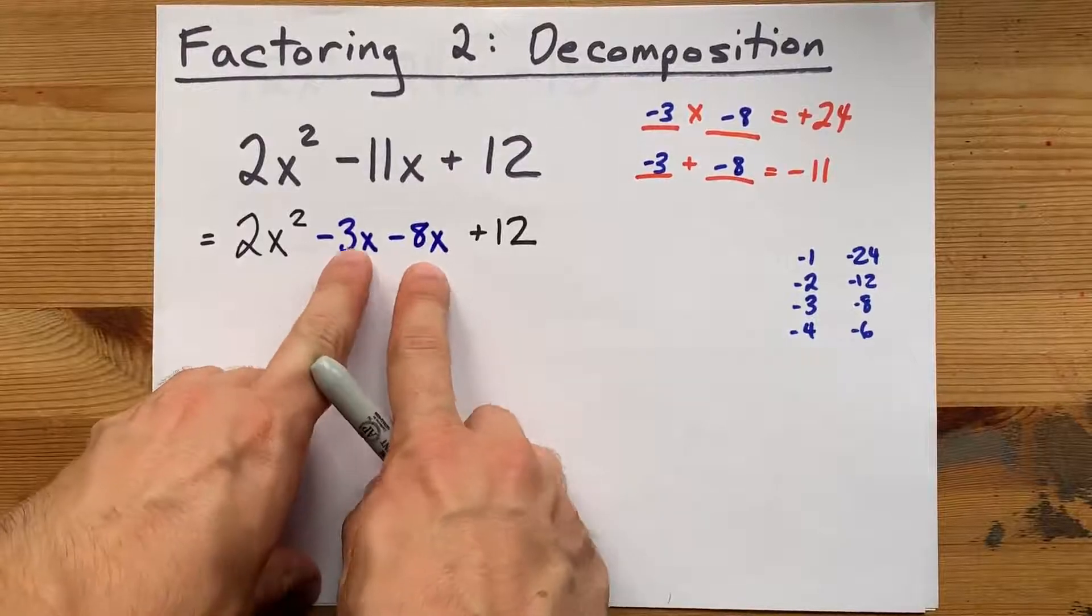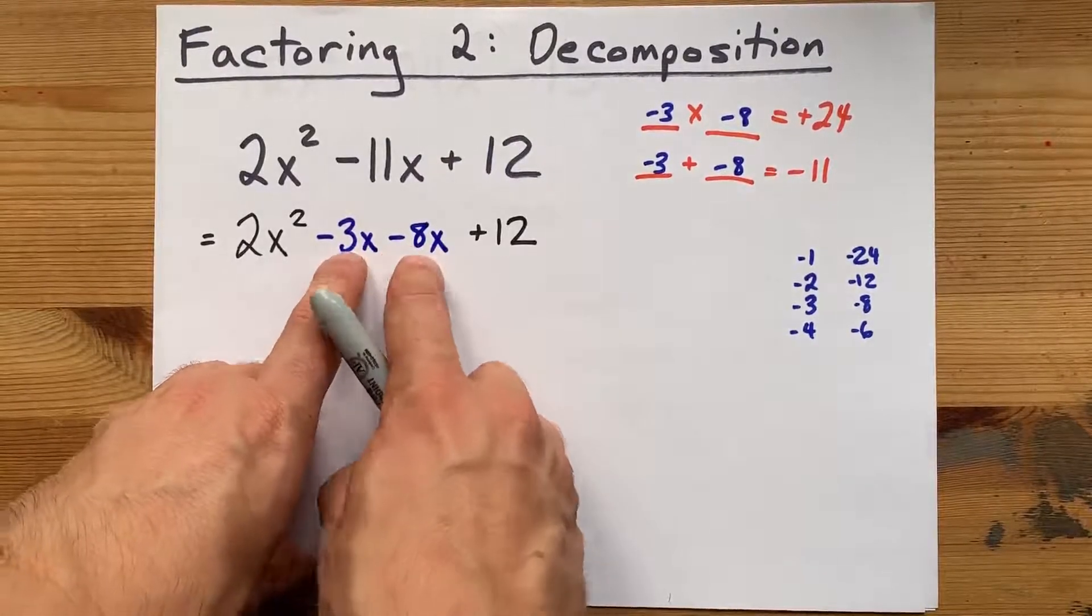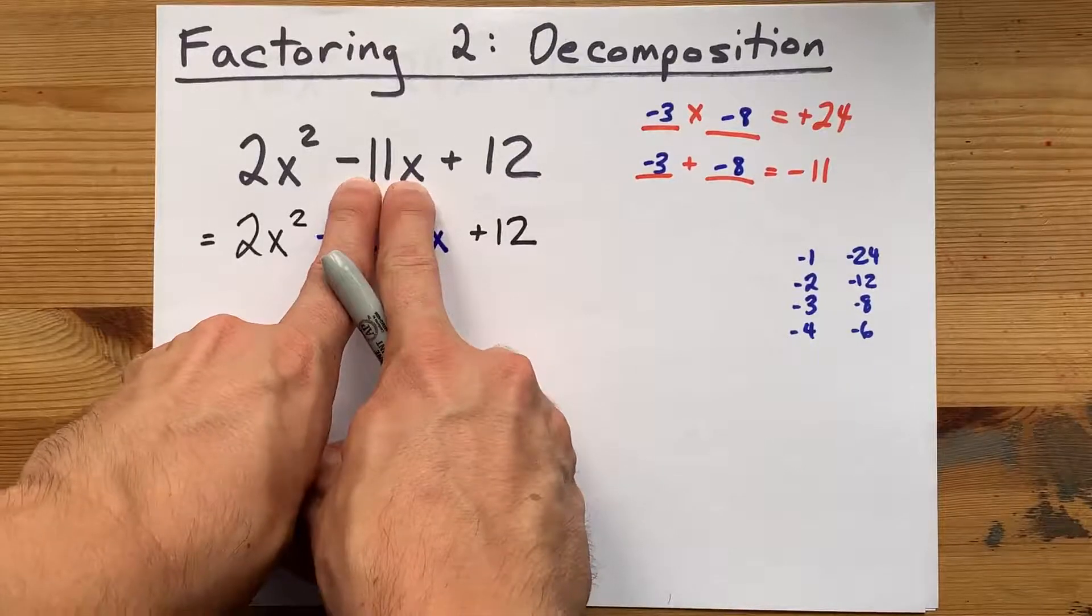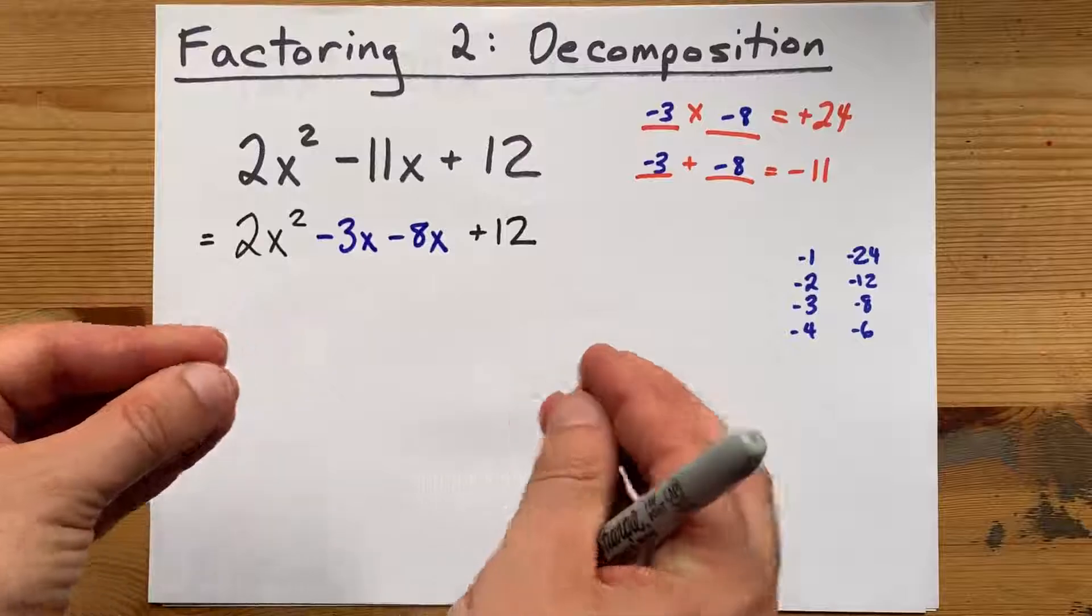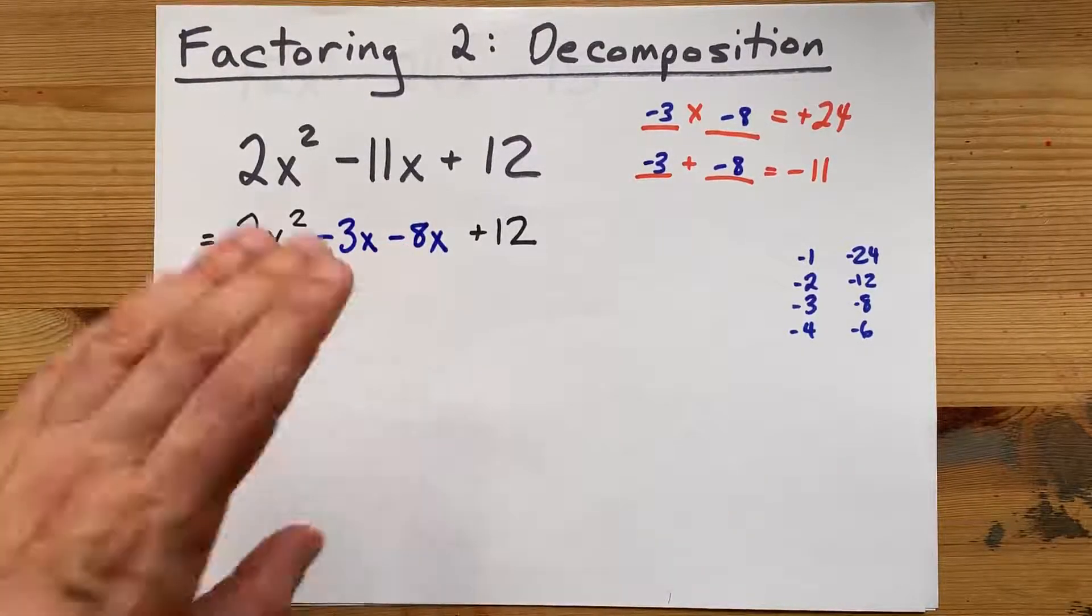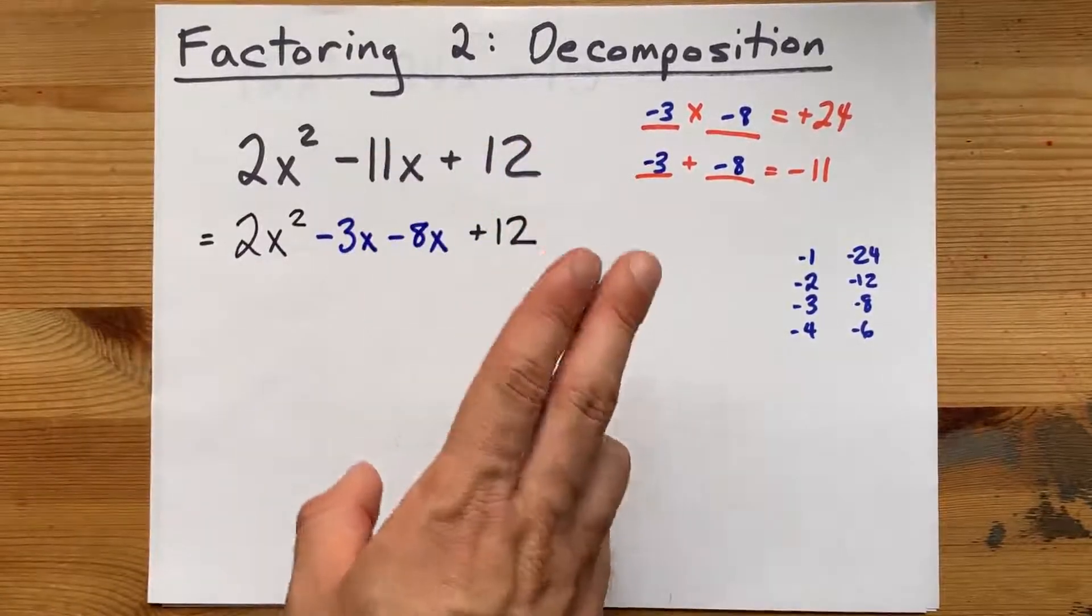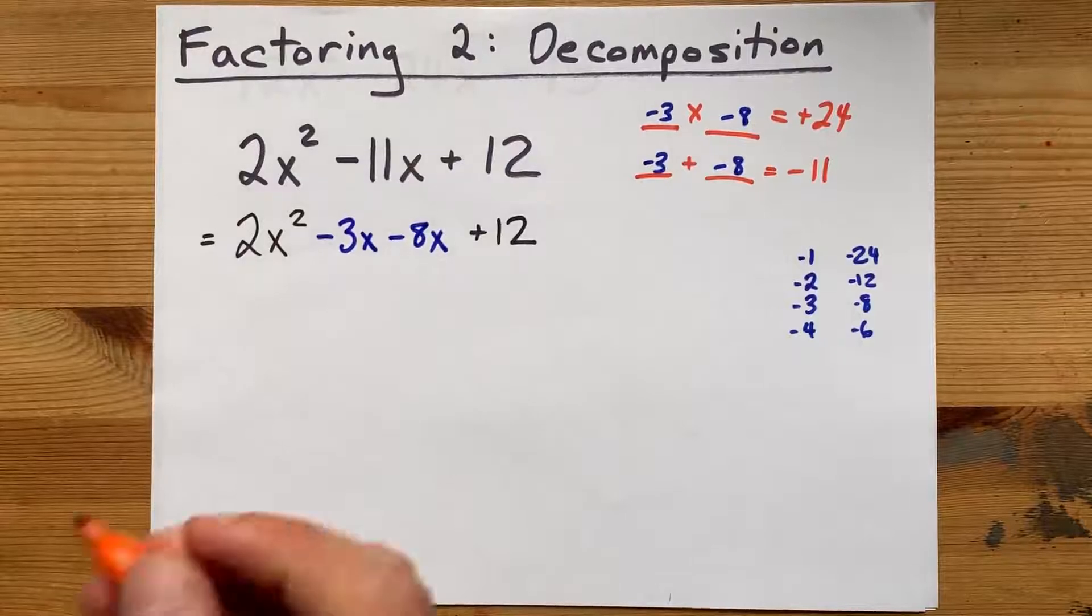Now, some kids will see those and want to collect them like like terms. Negative 3x minus 8x. Those definitely combine to give you this. But if you combine them, you're just going backwards, and we're trying to break this apart. So this is what you want. Now, what you're going to do is common factor the first pair and second pair separately.